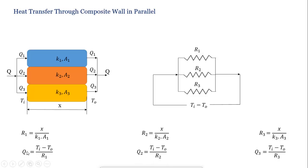Now Q1 equal to Ti minus To, this is temperature difference, upon R1 value. And Q2 equal to temperature difference upon R2 value, and Q3 equal to Ti minus To upon R3.